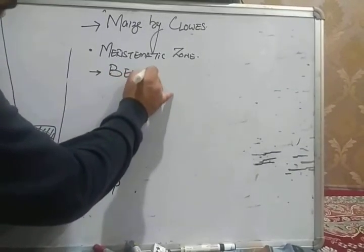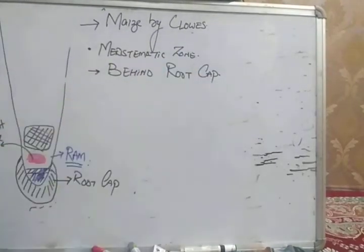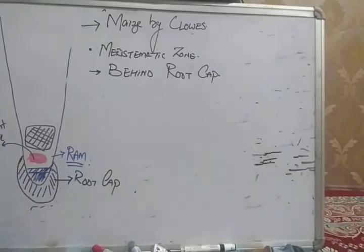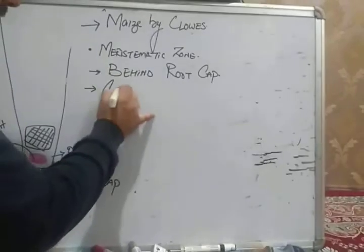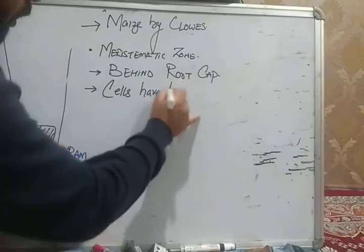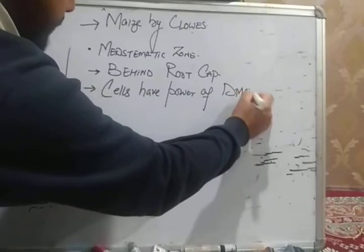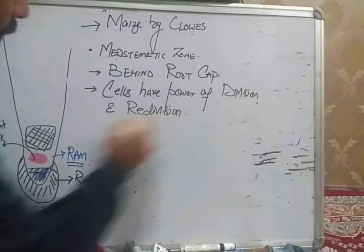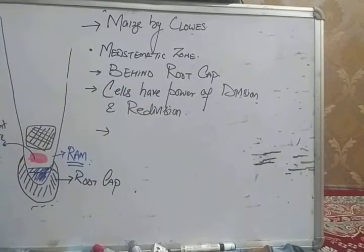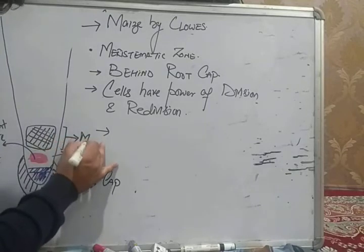This meristematic zone is present behind root cap. In this meristematic zone, cells have the power of division and redivision. Because of this power of division and redivision, all new cells are produced by this meristematic zone.